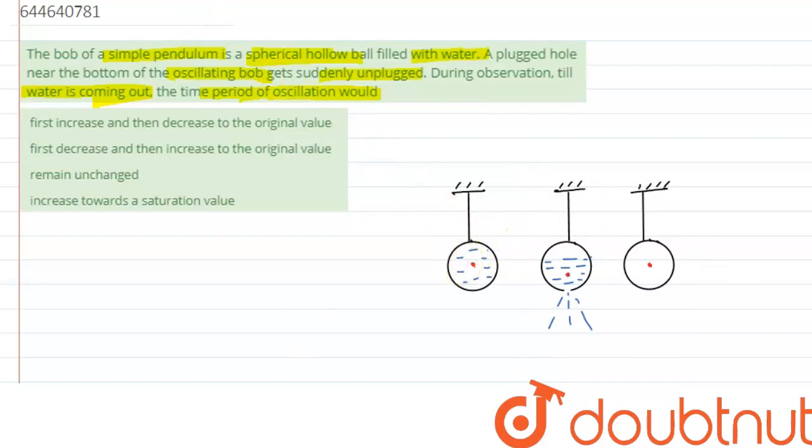So let's first of all try to write the expression for the time period of a simple pendulum. So the formula is given by T equals to 2π under root of l by g, where l is the distance or the length of string from the top till the center of mass of the bob.